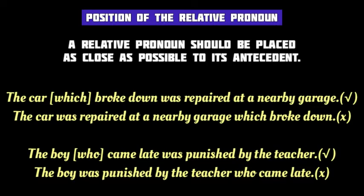But if the relative pronoun 'which' is placed far from the antecedent 'car,' it may seem to refer to 'garage' instead — making it appear the garage had a breakdown rather than the car. Similarly, 'The boy who came late was punished by the teacher' is correct because 'who' follows 'boy.' But if the relative clause 'who came late' is separated from 'boy,' it seems the teacher came late. To avoid such ambiguities, the relative pronoun should always come right after its antecedent.